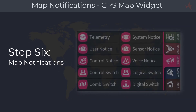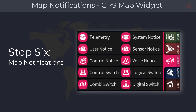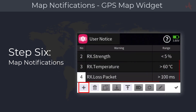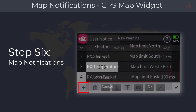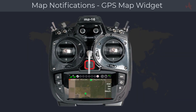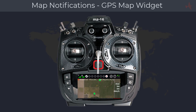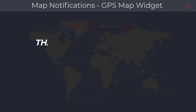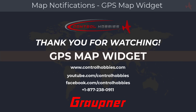Setting up a notification is easy and is done from the special menu on the user notice menu. Tap on the plus icon to add a notification, select the GPS module, look for the available map notifications, and select the one you would like to use. This concludes the installation and setup tutorial for the GPS map widget. Thank you for watching — if you have any questions or need additional support, you can contact us at controlhobbies.com.